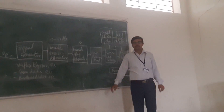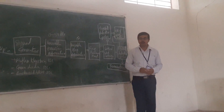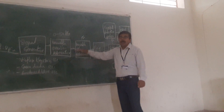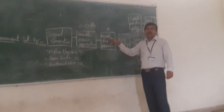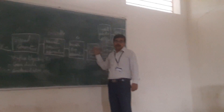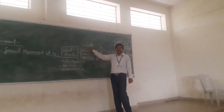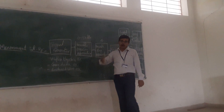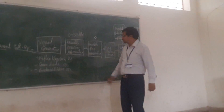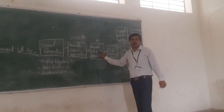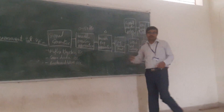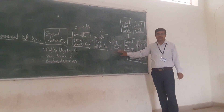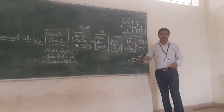Now when you are giving the variable flap attenuator — variable flap attenuator means this is the additional attenuator. If this 50 dB is not sufficient and you want more attenuation, then you can go for this one. This is optional.